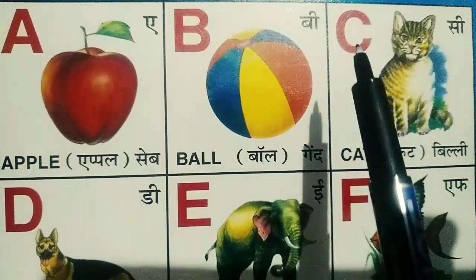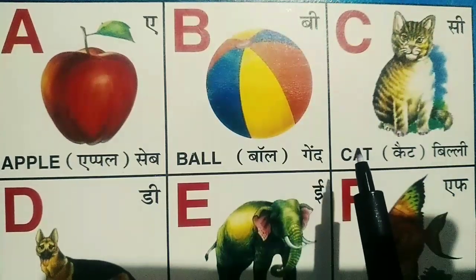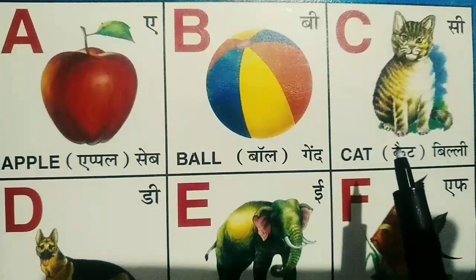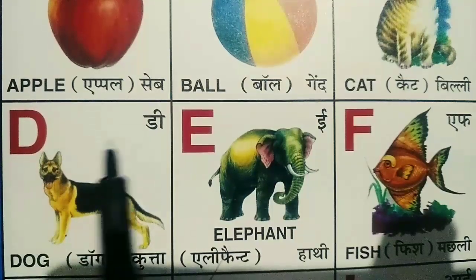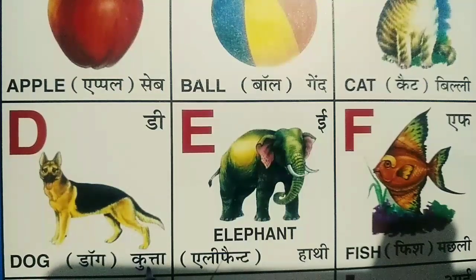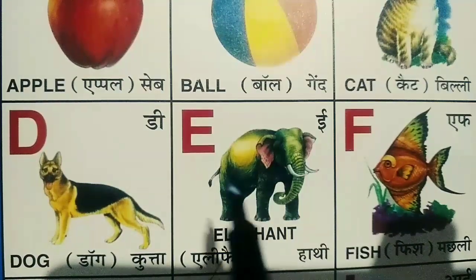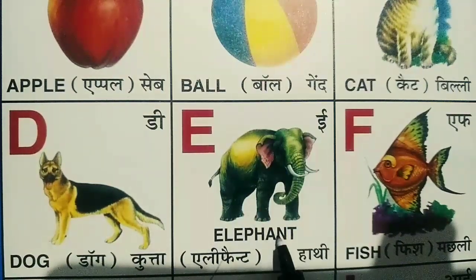C for cat. Cat means billi. D for dog. Dog means kutta.